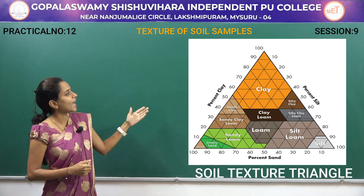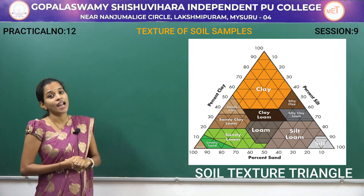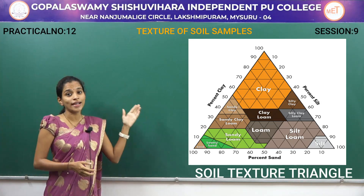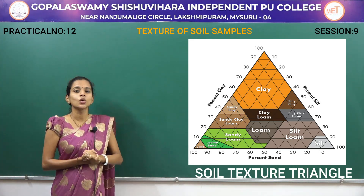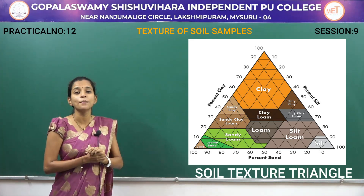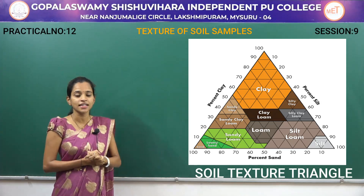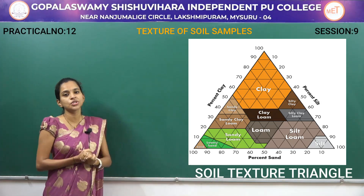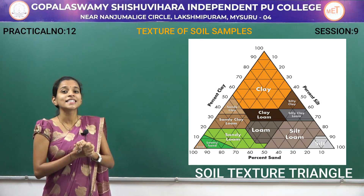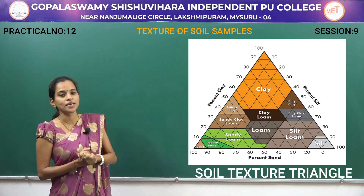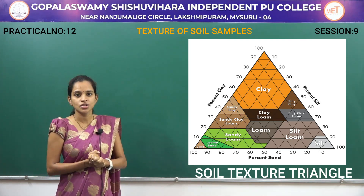In the next diagram you can see is a triangle — this is called a soil texture triangle. This triangle is a method of identifying the percentage composition of silt, sand, and clay present in the soil of your choice.